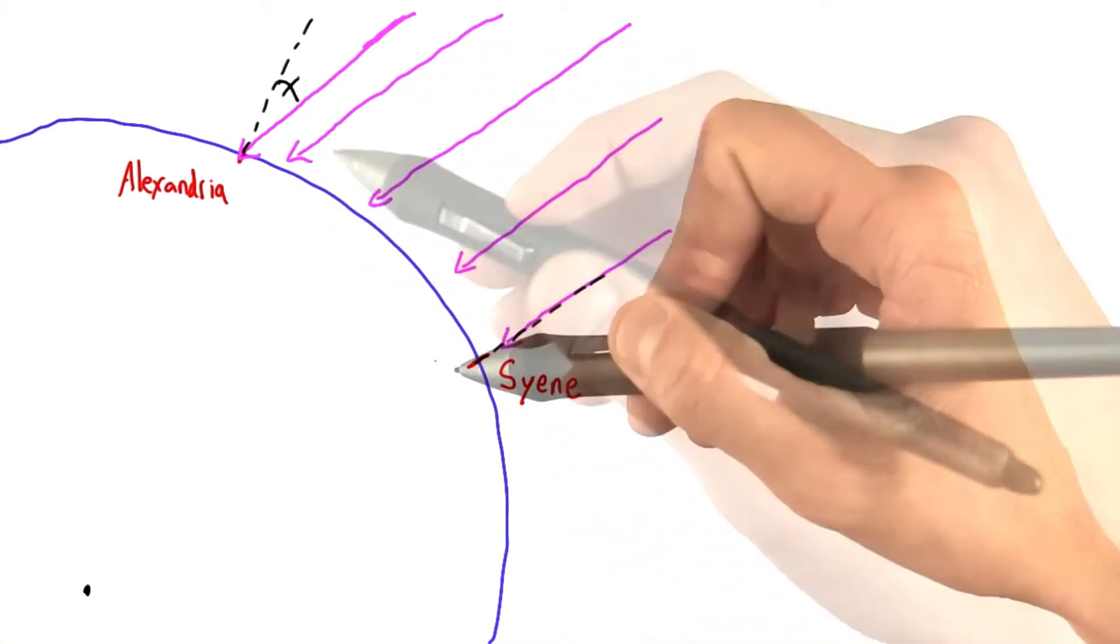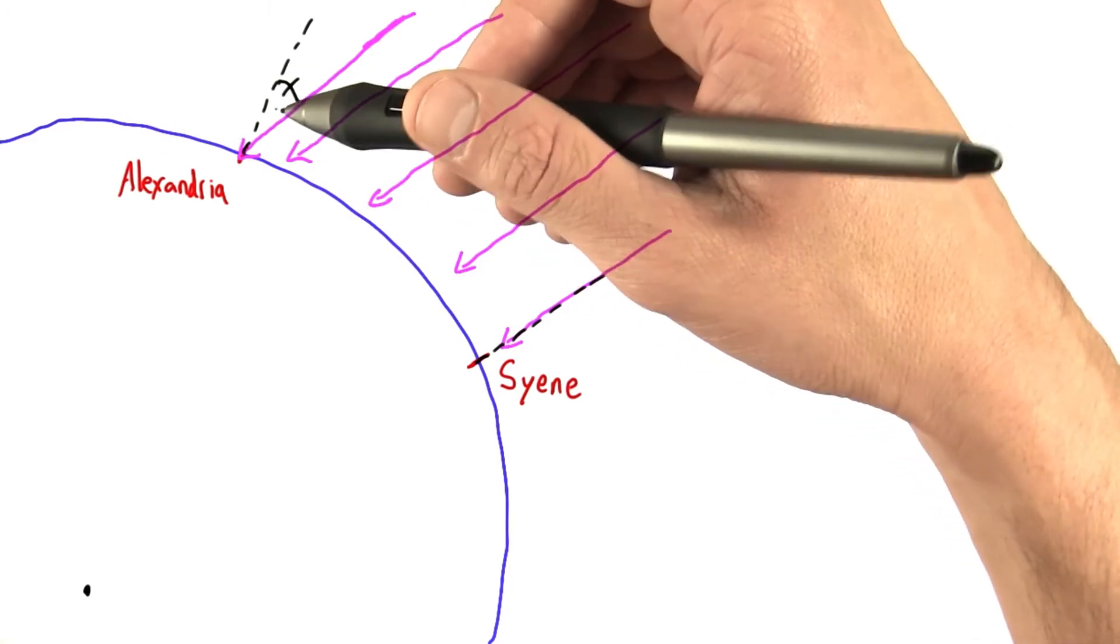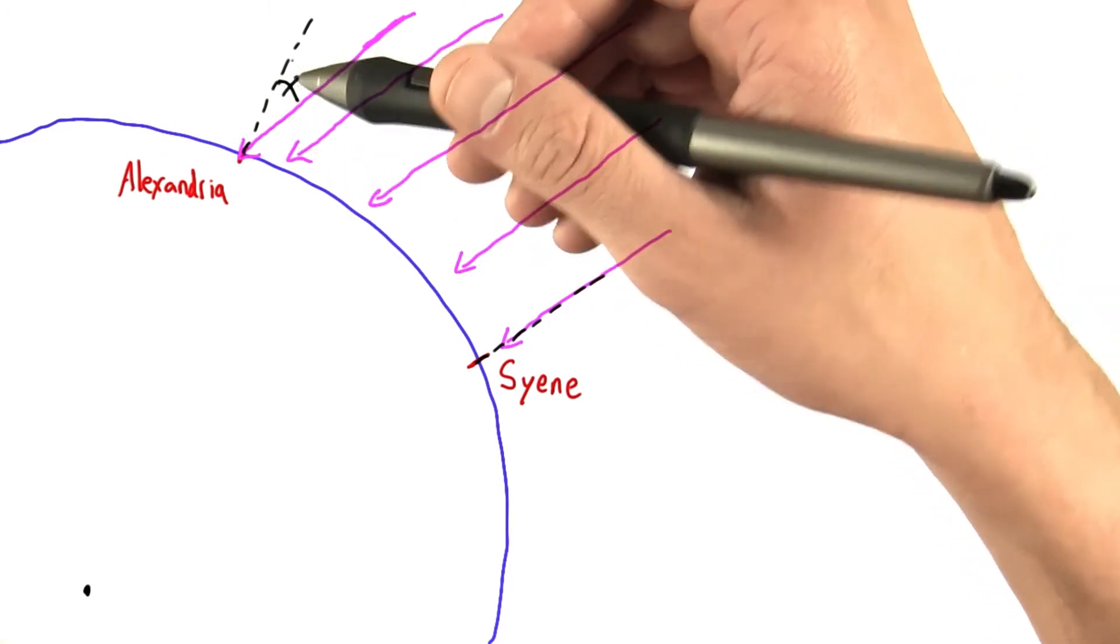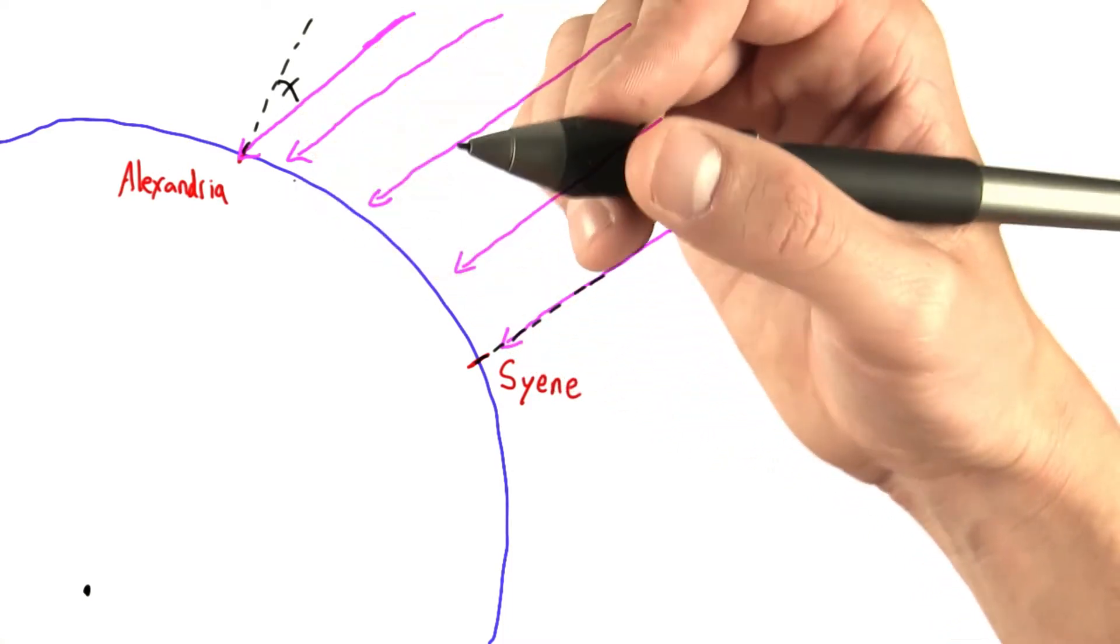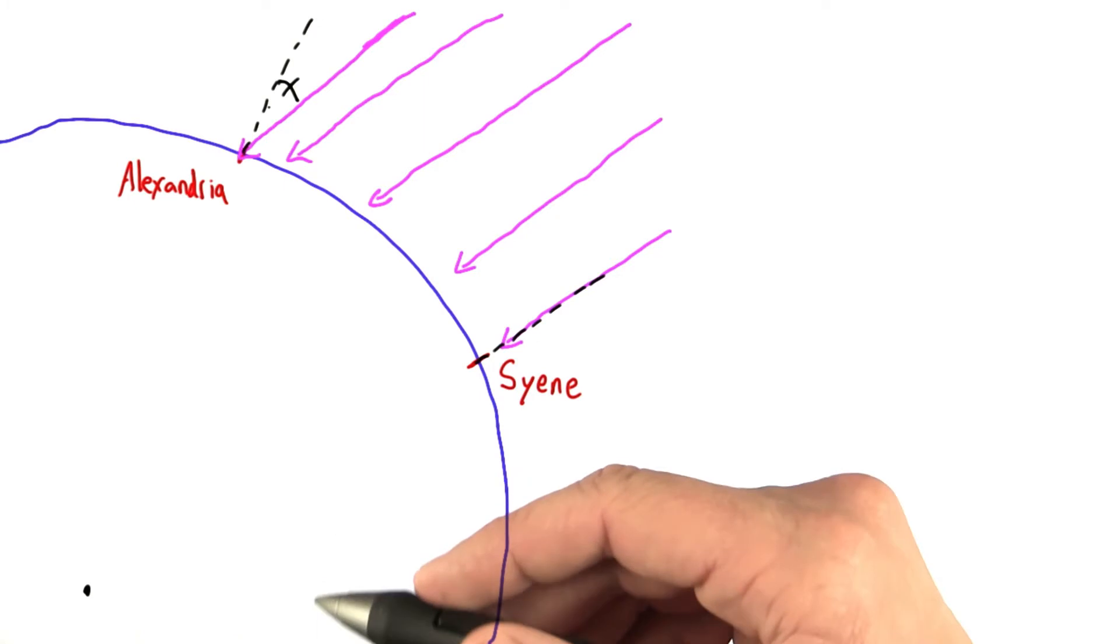Now we're trying to find the circumference of the earth. We found out that as we move further north from Alexandria, this angle actually gets bigger and the shadow gets bigger as well. So it seems like there's some relationship, hopefully a mathematical one, between this angle and the circumference of the earth. Let's see if we can figure it out.